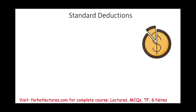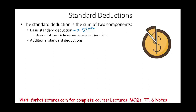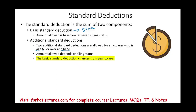The standard deduction is actually the sum of two components. The basic component, based on your filing status, is the amount I just covered. Then there is an additional standard deduction allowed for taxpayers who are age 65 or older and for those who are blind. The amounts depend on your filing status and change from year to year.